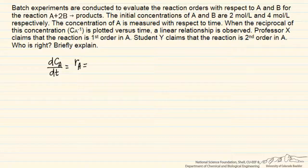The rate at which A accumulates, or the negative of the rate with which it's consumed, is equal to the rate constant times the concentration of A to some power alpha, which we're going to try to evaluate, and the concentration of B to some power beta.